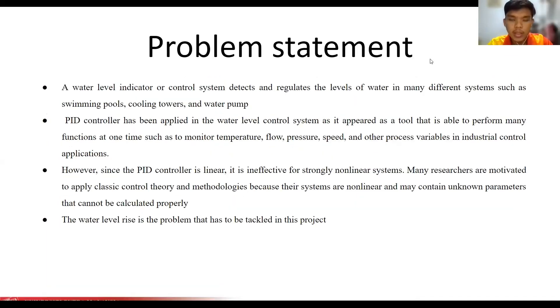For the problem statement, a water level indicator or control system detects and regulates levels of water in many different systems such as swimming pools, cooling towers, and water pumps. PID controller has been applied in the water level control system as a tool that is able to perform many functions at one time such as monitor temperature, flow, pressure, speed, and other process variables in industrial control applications.